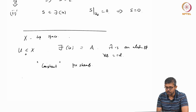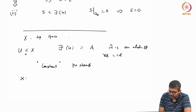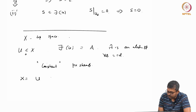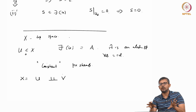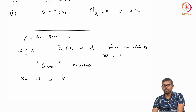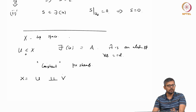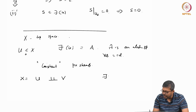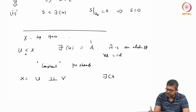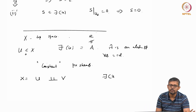The constant pre-sheaf is not a sheaf. If you take X equal to U disjoint union V, with two open subsets that are disjoint — meaning X is not irreducible and U intersection V is empty — and if A has at least two elements, it is not the trivial group.